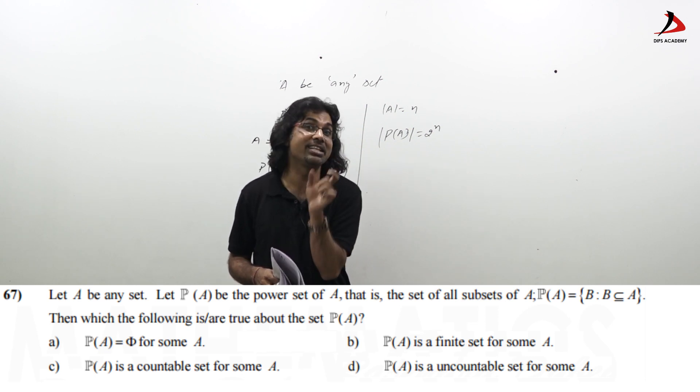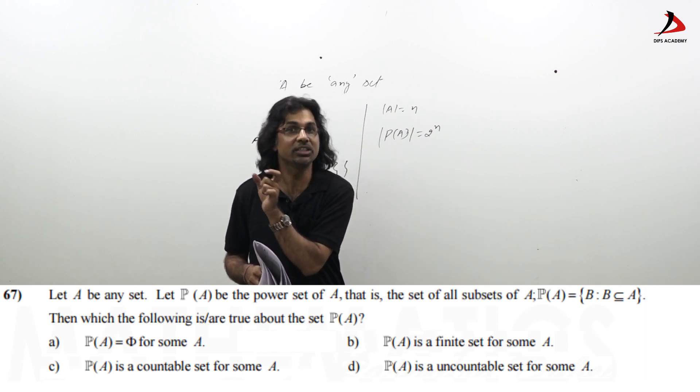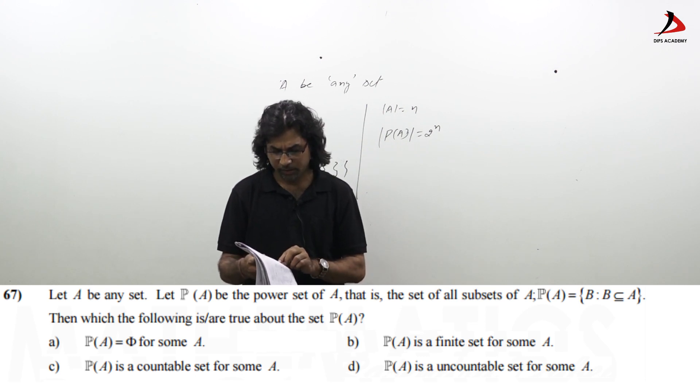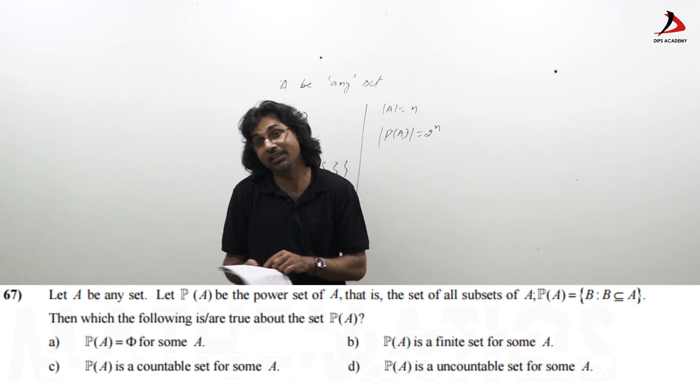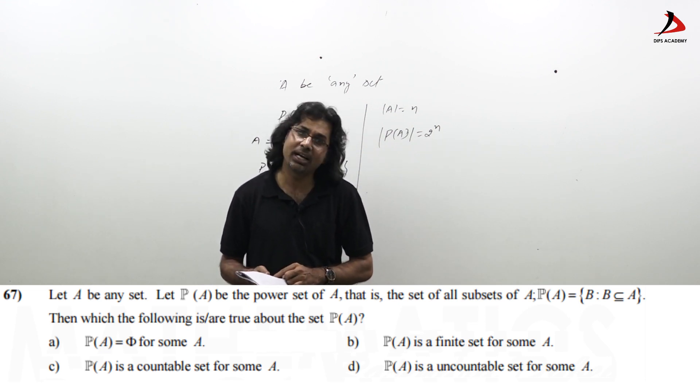That means, even finite set can be taken as countable sets. So, third option, P(A) is countable set for some A. So, in this reference, this option comes out to be correct.